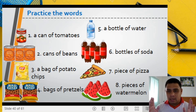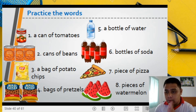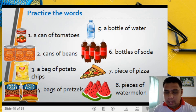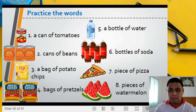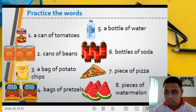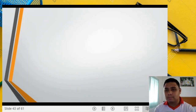I have here the list of all the words. We will practice from number 1 to number 8. Number 1: a can of tomatoes. Number 2: cans of beans. Number 3: a bag of potato chips. Number 4: bags of pretzels. Number 5: a bottle of water. Number 6: bottles of soda. Number 7: piece of pizza. Number 8: pieces of watermelon.